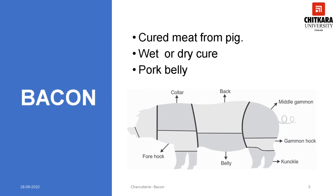Bacon is a type of cured pork made from various cuts, typically from pork belly or from less fatty back cuts. It is eaten on its own as a side dish or used as a minor ingredient to flavor dishes. Bacon is also used for barding and larding roasts, especially game including venison and pheasants.